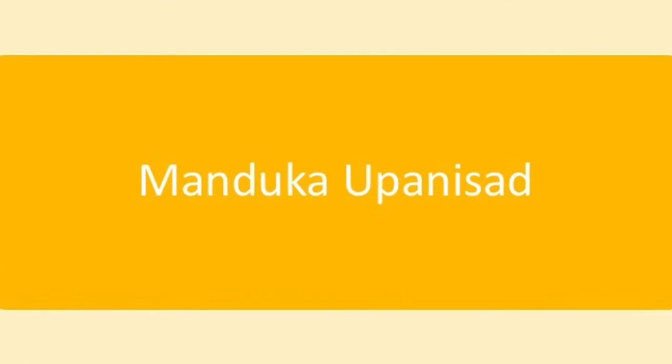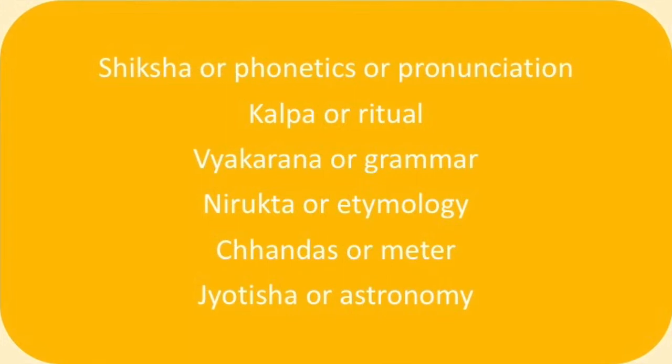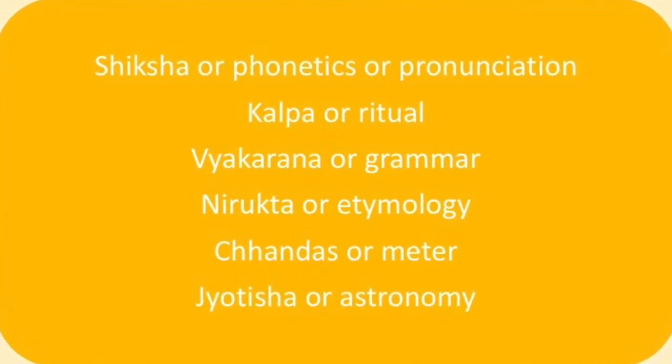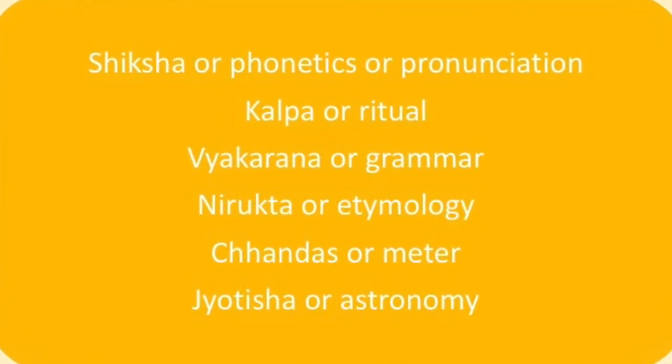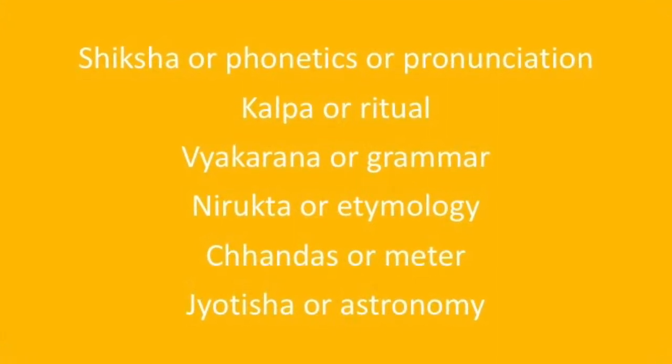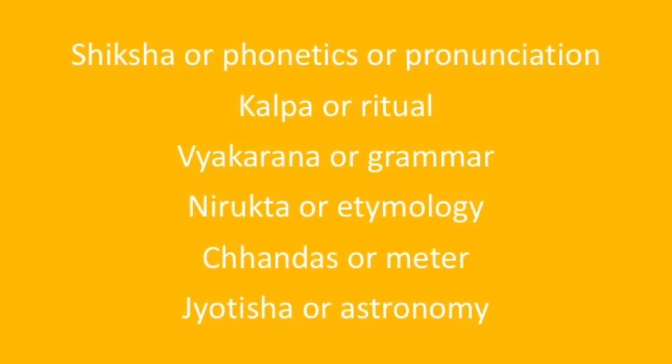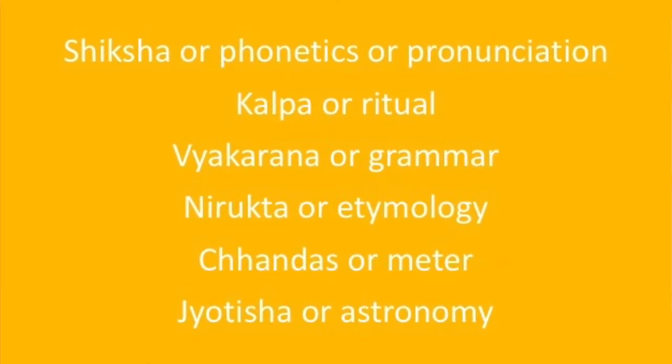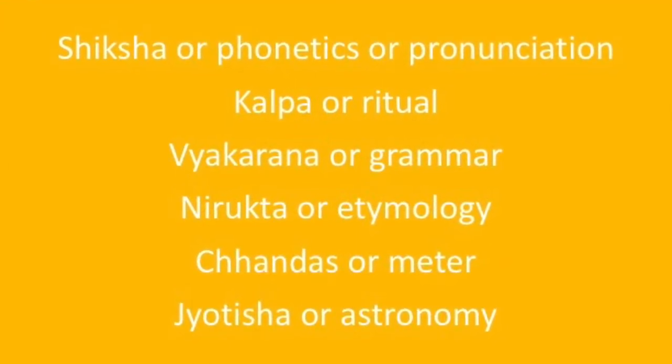They help to understand Veda Mantras completely and in depth. In case there is a difference between the two, Vedas will always prevail over the Vedangas. Mundaka Upanishad mentions six Vedangas as follows: Shiksha or Phonetics or pronunciation, Kalpa or ritual, Vyakaran or grammar, Nirukta or etymology, Chhandas or meter, Jyotish or astronomy.